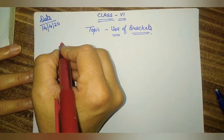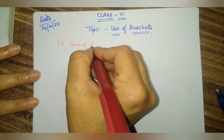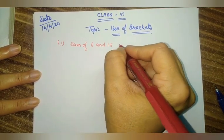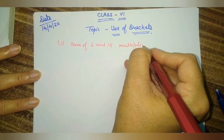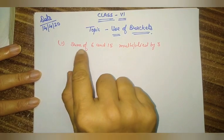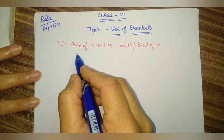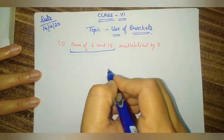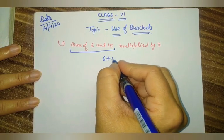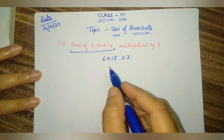They have given an equation in the form of a statement. The statement is: sum of 6 and 15 multiplied by 3. How will you represent this statement in the form of a numerical expression? To express this, we require the use of brackets. Because what we have to do first is the sum of 6 and 15 — so first we show the sum of 6 and 15, then multiply by 3.